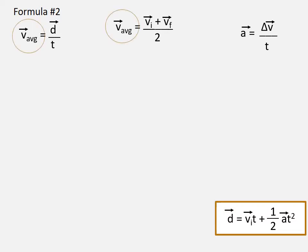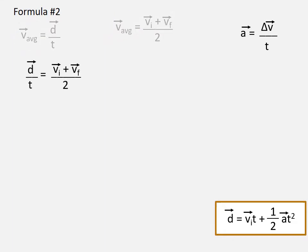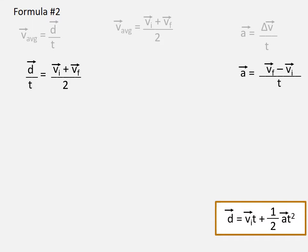I notice that V-average appears in two of the formulas but not in the final equation, so I want to eliminate it. Since V-average = D/T and also V-average = (VI + VF)/2, it follows that D/T = (VI + VF)/2. That eliminates V-average, but now I have VF which I also need to eliminate. In the acceleration formula, I substitute VF − VI for ΔV, giving A = (VF − VI) / T.